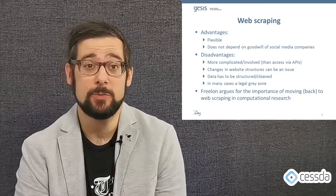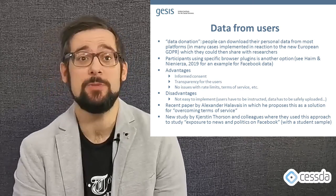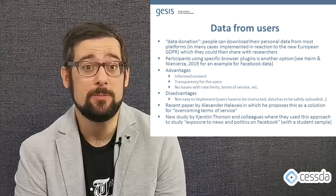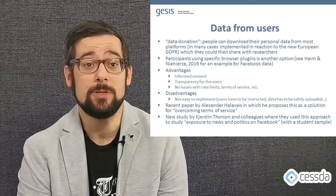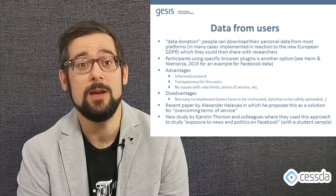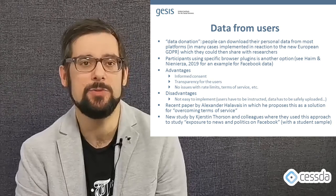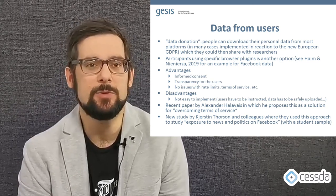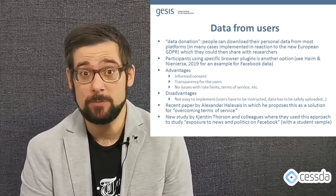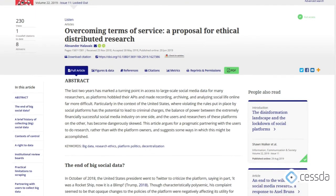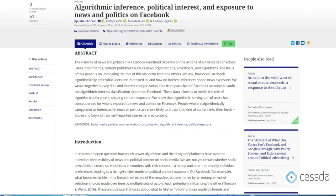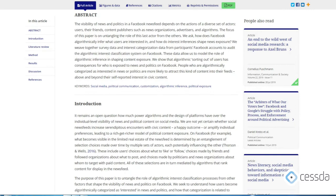The third option is getting the data directly from the users, which has also been called data donation. Most social media platforms provide the option for users to download their own data — many of these were implemented in reaction to the new General Data Protection Regulation in Europe. Users can then decide to share this exported data with researchers. Another option is using a browser plugin to collect data. The key advantages are immediate informed consent, transparency for users about what data they provide, and no issues with rate limits or terms of services. The main disadvantage is that it might not be easy to implement. There's a recent paper by Alexander Halavays proposing data from users as a solution for overcoming terms of services, and a new study by Kirsten Torsen and colleagues using this approach to study exposure to news and politics on Facebook.